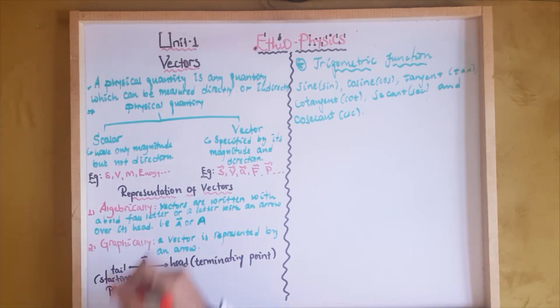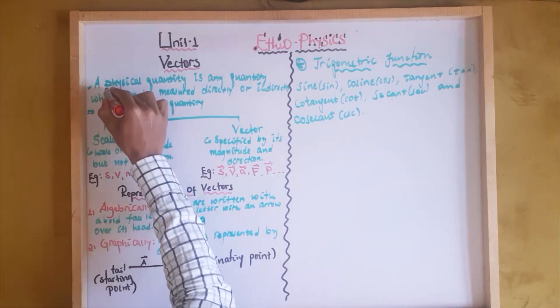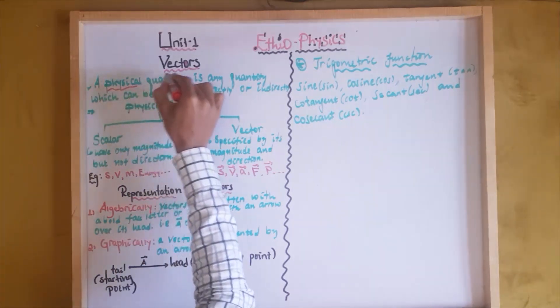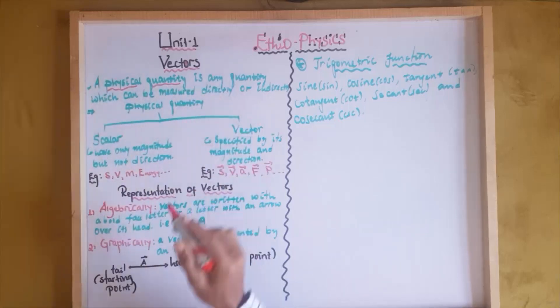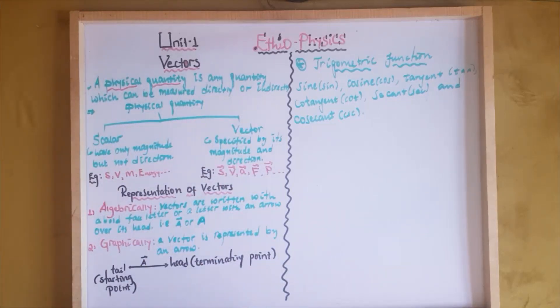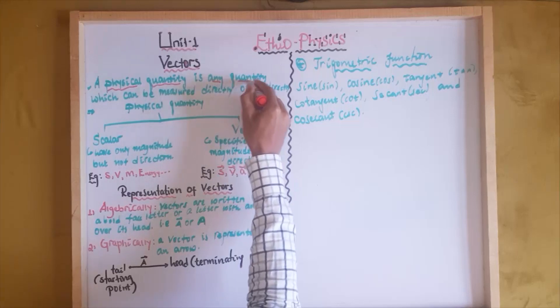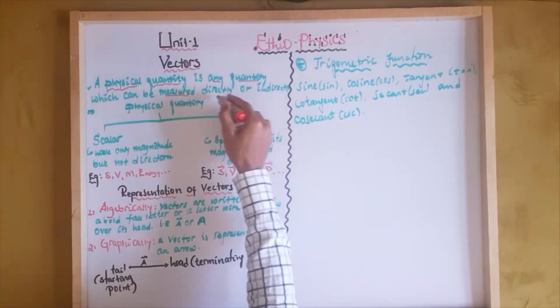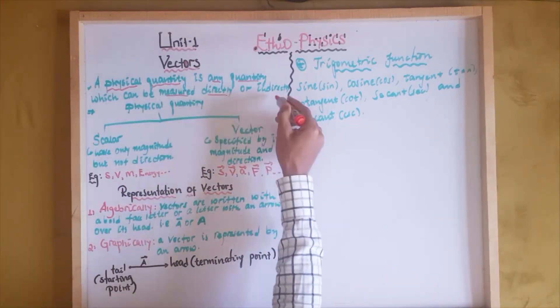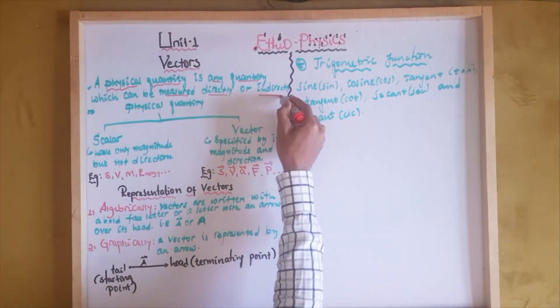Physical quantity is a physical quantity. When you say physical quantity, it is any quantity which can be measured either directly or indirectly.